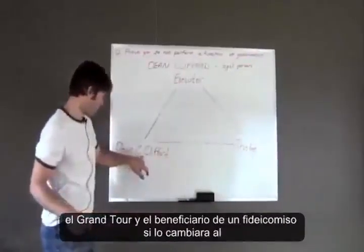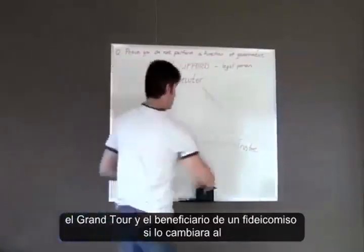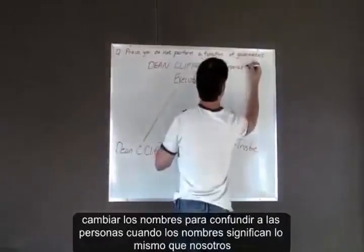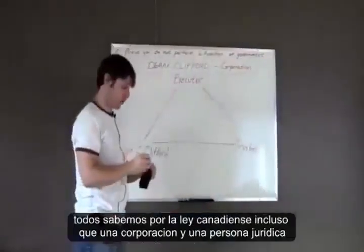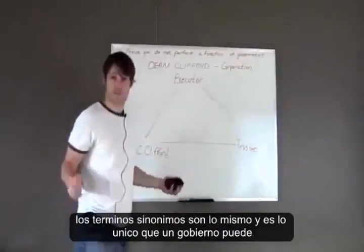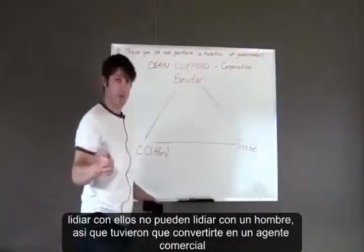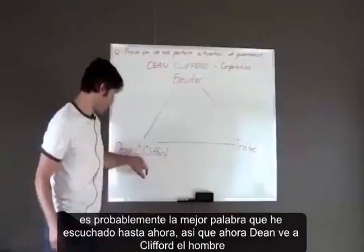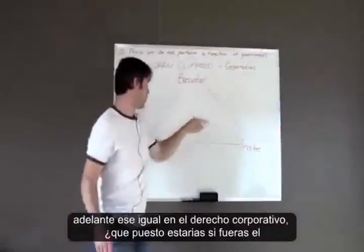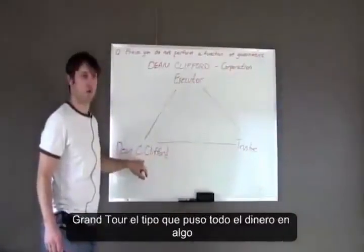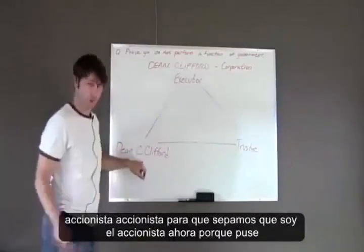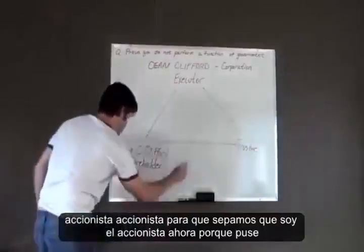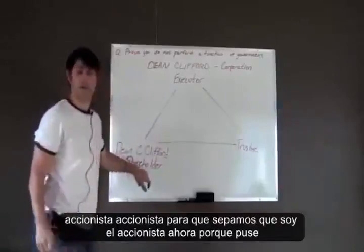If this is the grantor and beneficiary of a trust, if you switch this to the Dean Clifford Corporation — all lawyers do is switch names around to confuse people when the names mean the same thing. We know from Canadian law that a corporation and a legal person are synonymous terms. It's the same thing, and it's the only thing a government can deal with. They can't deal with a man, so they had to make you an agent in commerce. So Dean Clifford, the man, is the grantor and beneficiary. In corporate law, what position would that equal? If you were the grantor — the guy who put all the money into something? Shareholder.